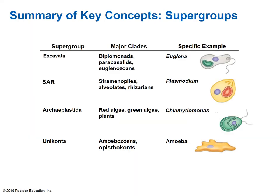To summarize the four eukaryotic supergroups: Excavata, SAR — which is really three groups: stramenopiles, alveolates, and rhizarians — Archaeoplastida, which primarily means algae and plants, and Unikonts, which are the amoebas and animals.